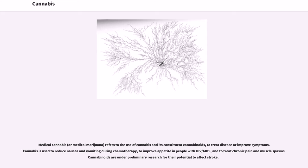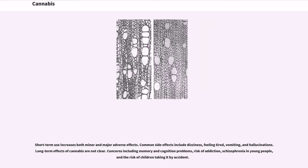Medical cannabis, or medical marijuana, refers to the use of cannabis and its constituent cannabinoids to treat disease or improve symptoms. Cannabis is used to reduce nausea and vomiting during chemotherapy, to improve appetite in people with HIV/AIDS, and to treat chronic pain and muscle spasms. Cannabinoids are under preliminary research for their potential to affect stroke. Short-term use increases both minor and major adverse effects. Common side effects include dizziness, feeling tired, vomiting, and hallucinations. Long-term effects of cannabis are not clear. Concerns include memory and cognition problems, risk of addiction, schizophrenia in young people, and the risk of children taking it by accident.